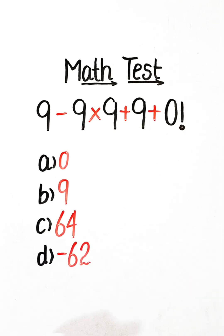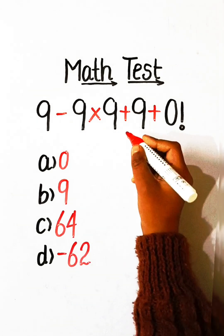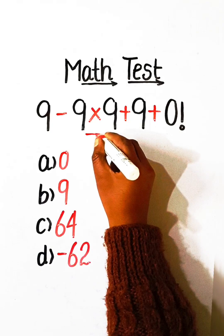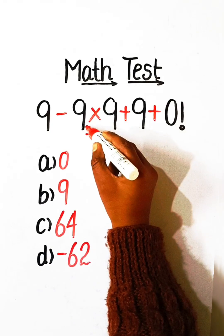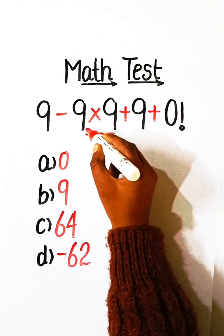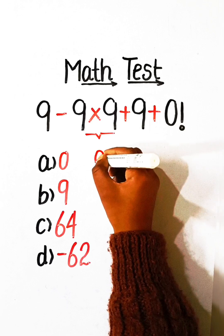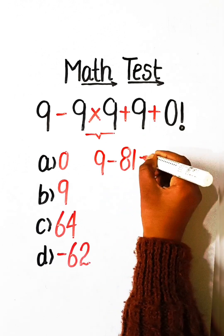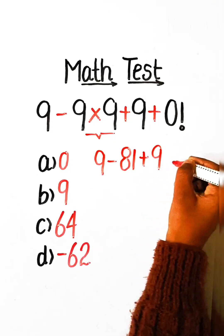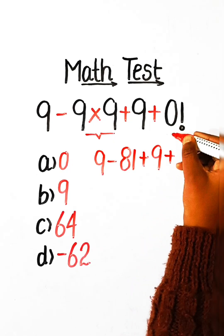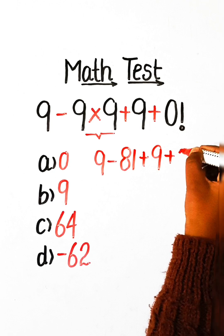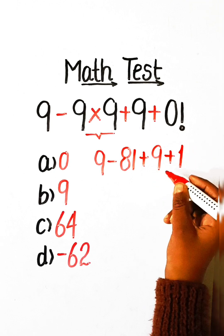So let's solve this. We have to first solve the multiplication part: 9 multiply by 9. So we write 9 minus 81 plus 9 plus the value of 0 factorial, which is 1.